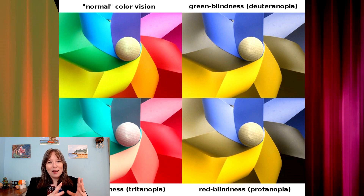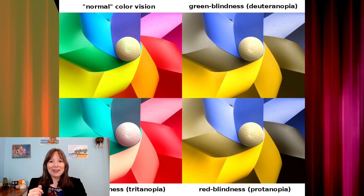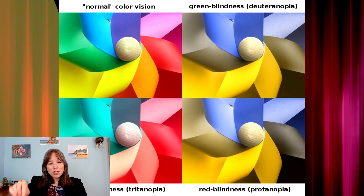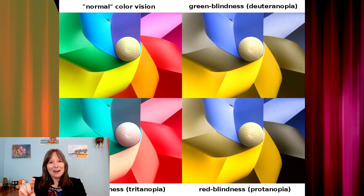So we can see in the upper left quadrant what typical color vision looks like. In the upper right, the greens and reds appear quite similar — this is a very common type of green cone colorblindness known as deuteranopia, where greens and reds seem similar and blues and purples seem similar. In the lower right, we see what happens when red cones malfunction — and because red and green are opposites on a color wheel, these two types of colorblindness actually manifest similarly.